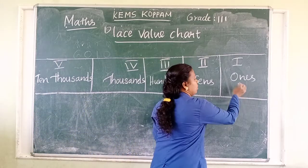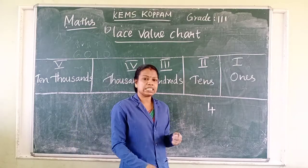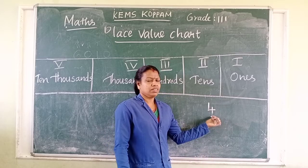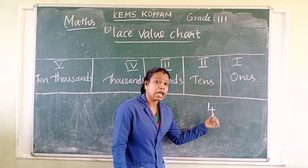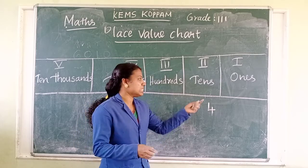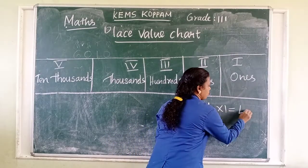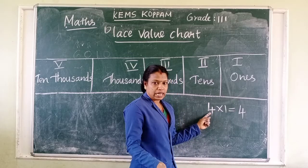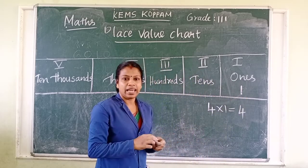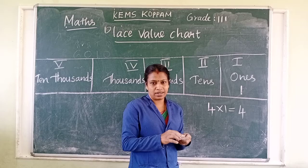What's the number? This is four. It has only one place — which is ones. So what is the value of that ones place? Here the number is four, so its place value is four itself. The place value of ones is one, so four into one equals four. The place value of four is four itself.